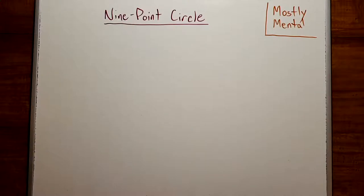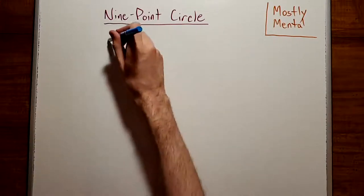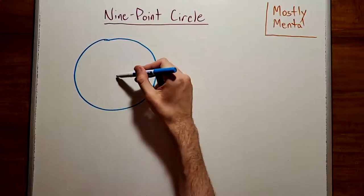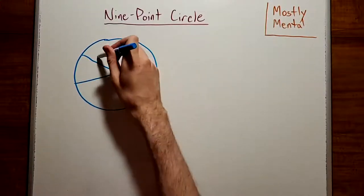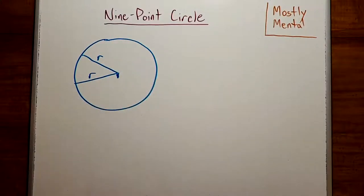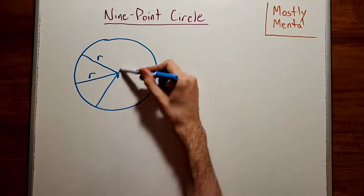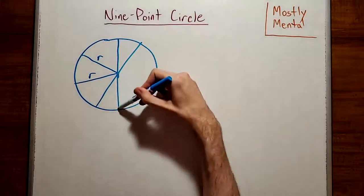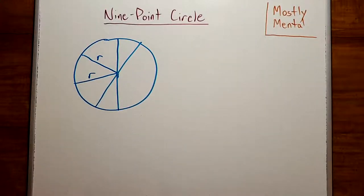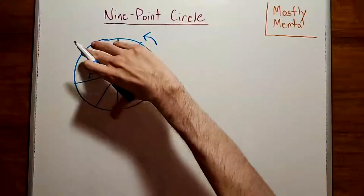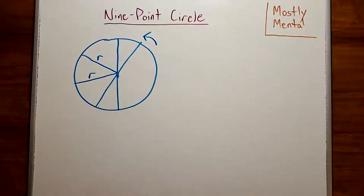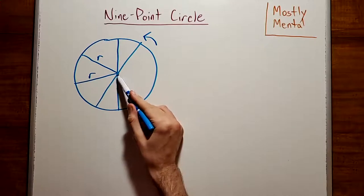We'll start with a simple question: what's the center of a circle? We could define the center as the point that's the same distance from any two points on the circle, or as the intersection point of any two diameters, or maybe it's the center of symmetry — the point you could rotate the circle around without changing it. There are a lot of definitions you could come up with, and all of them will end up describing this same point.